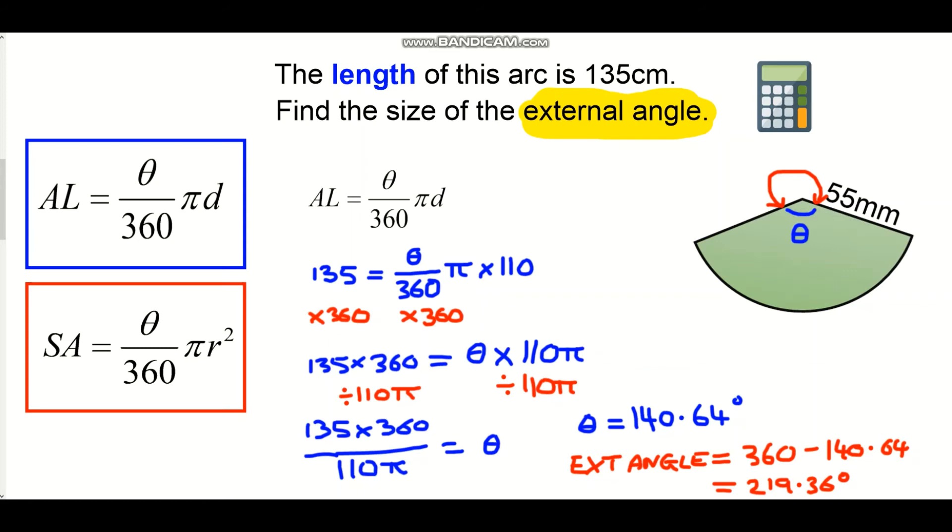So much like when you're trying to find a side length at either a radius or diameter. If you're trying to find an internal or external angle. Put all the information into the right equation. Rearrange it to find what theta is. And then if you're trying to find an external angle. You want to go that extra step and take your internal angle away from 360. And that will give you your external angle.